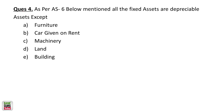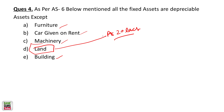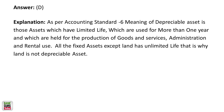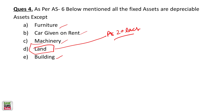As per AS6, not all fixed assets are depreciable. For example, land is not a depreciable asset. If you buy land today at 20 lakh rupees, there is no wear and tear to the land — unlike a building, machinery, car, or furniture. Land has no limited life; it will be there even after 100 years. So you cannot allocate depreciation to land under Accounting Standard 6.